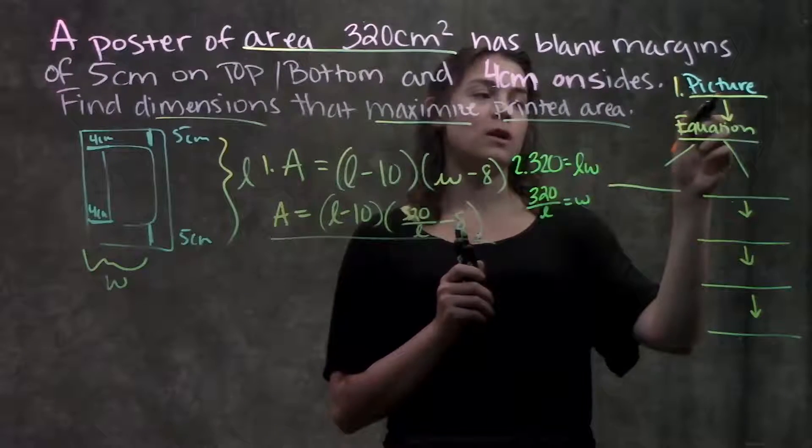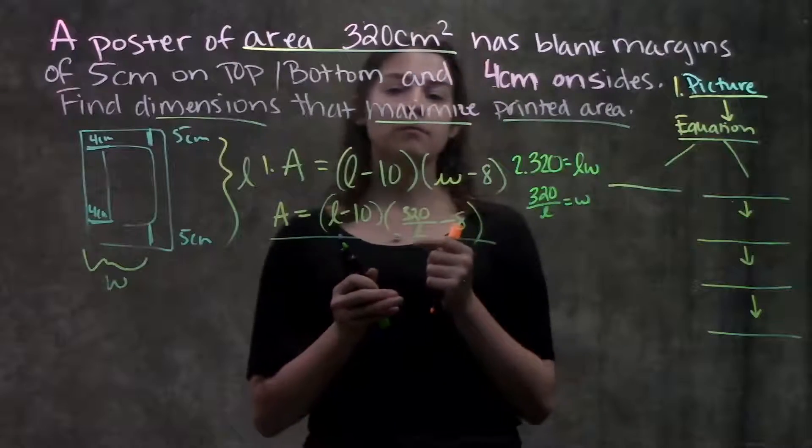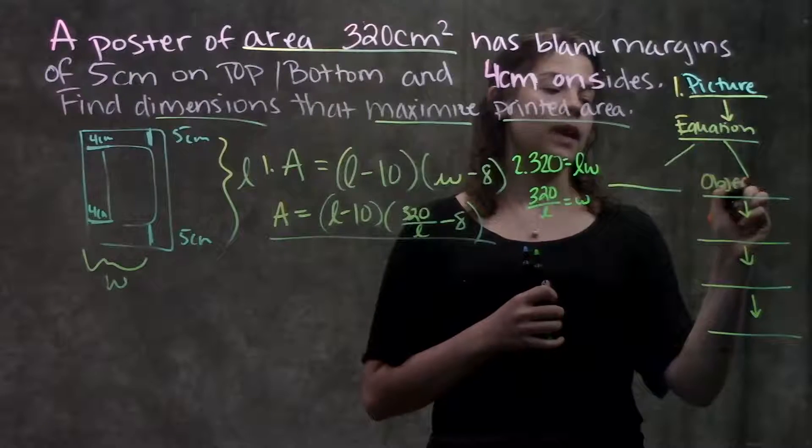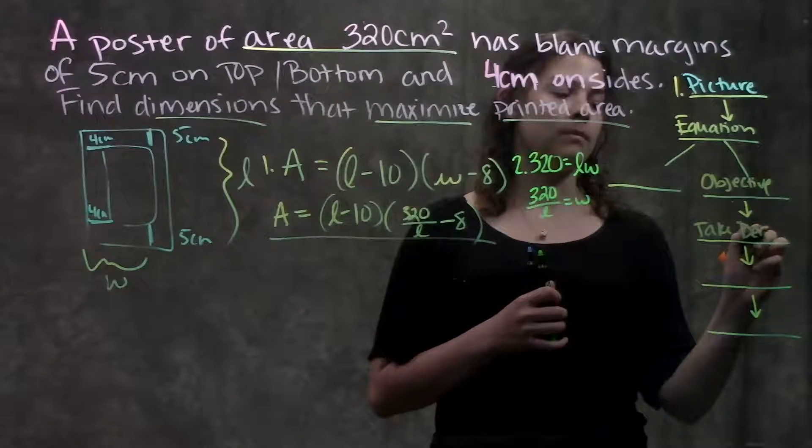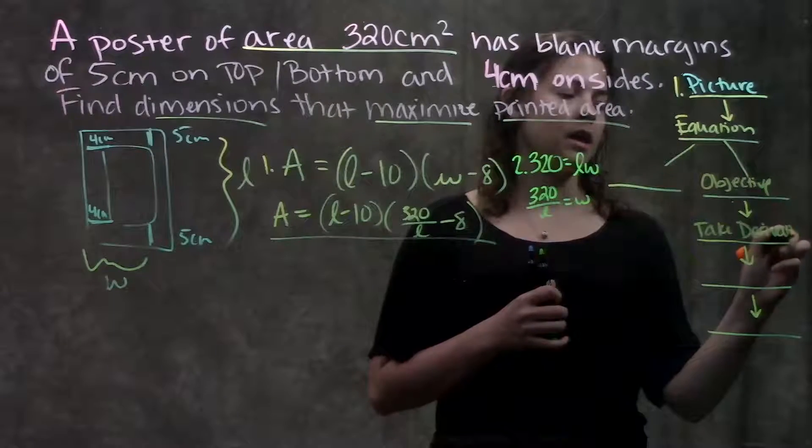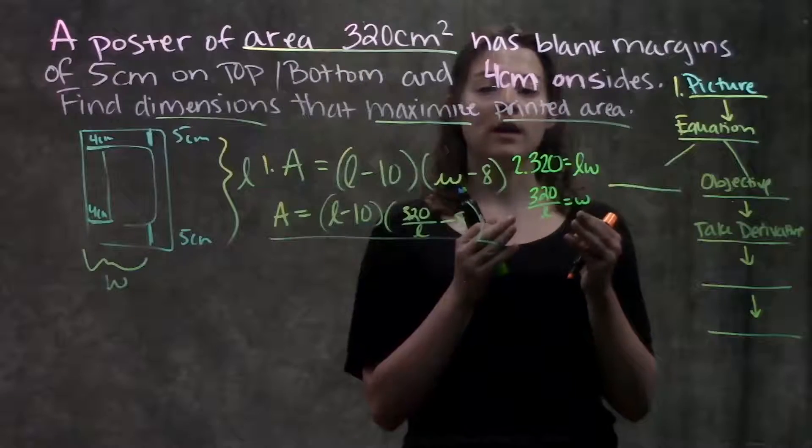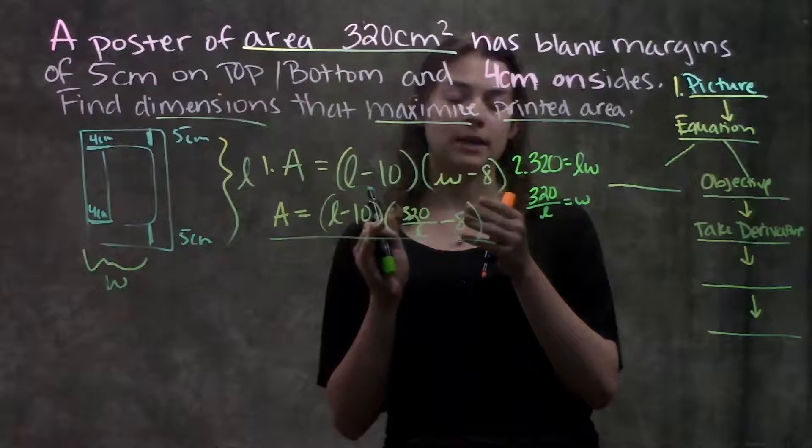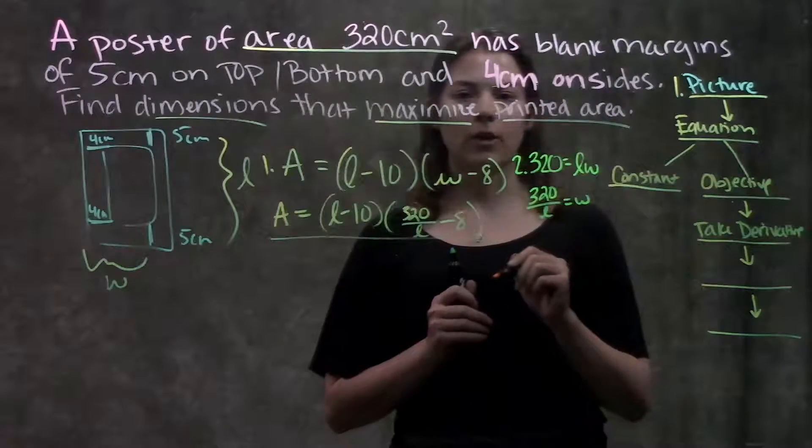Let's fill in our flowchart. So step one, draw a picture. Step two, come up with an equation. And for these types of problems, you'll always have at least two equations. One equation is our objective one, that's the one that we want to take the derivative of, the one that we want to either maximize or minimize. And our second equation is some set relationship between our variables, so that we can solve for one and plug it into our objective function. So that's called our constant equation.